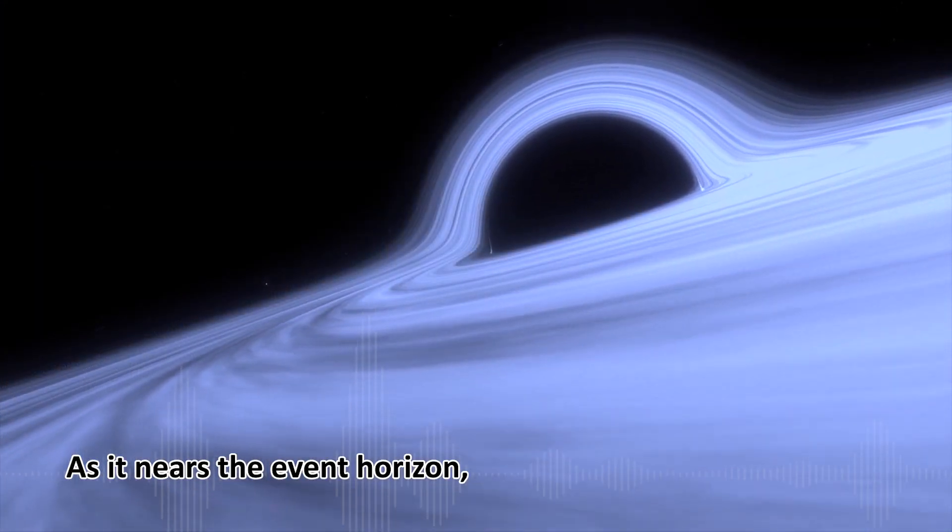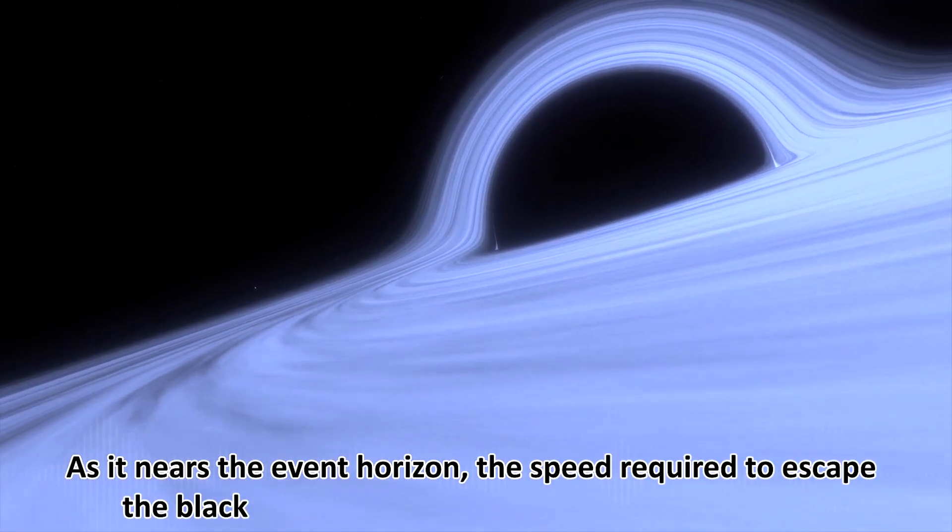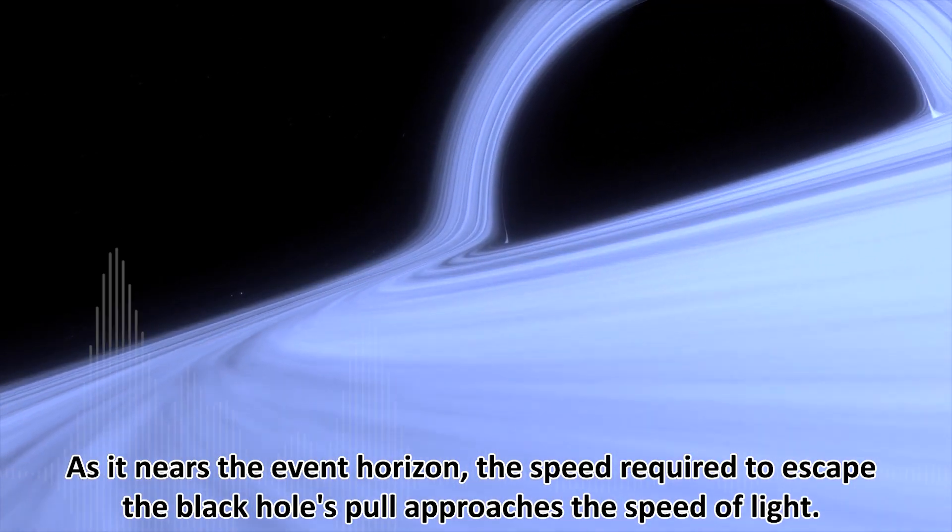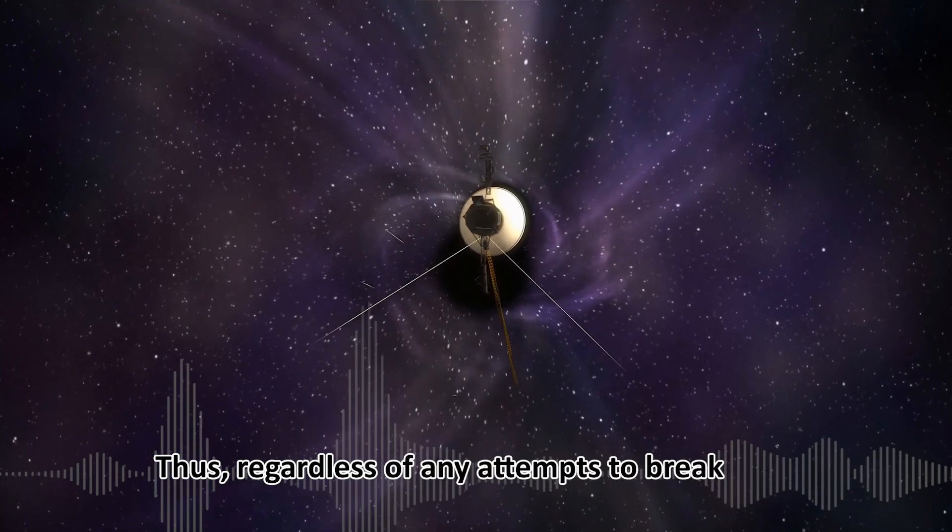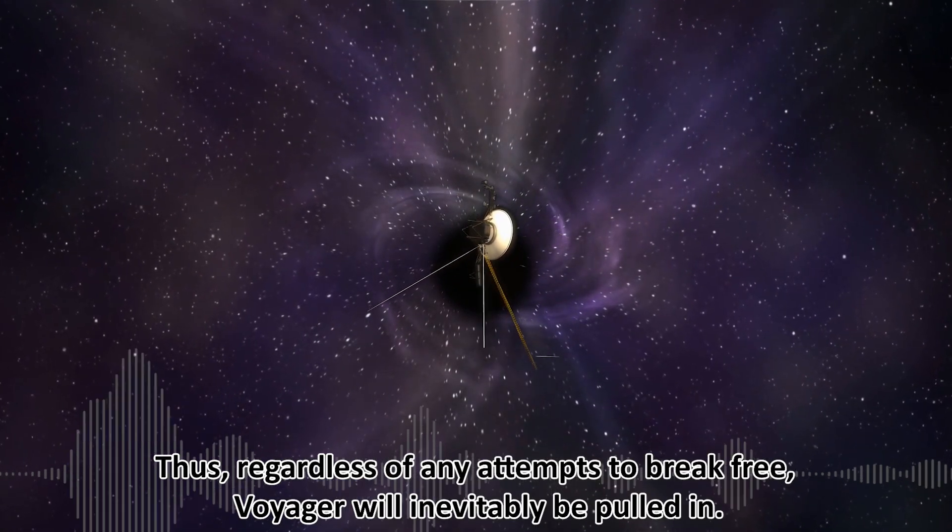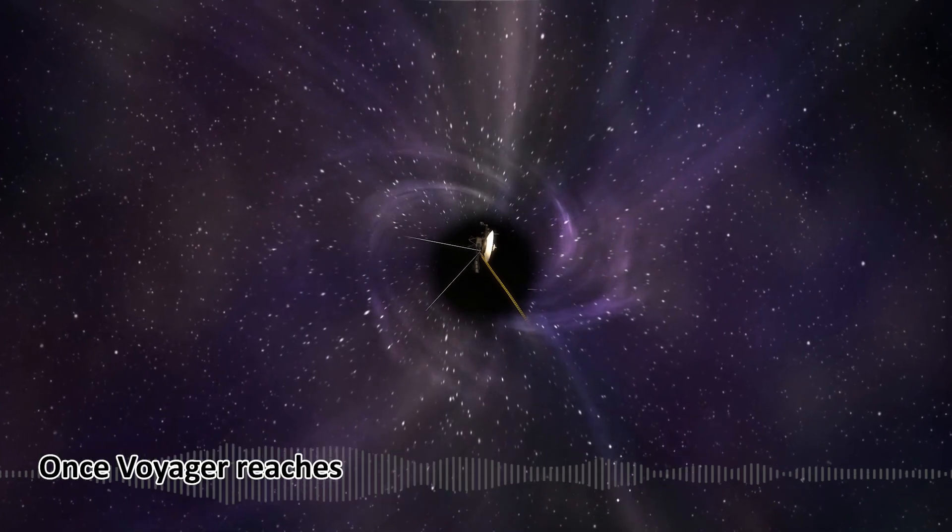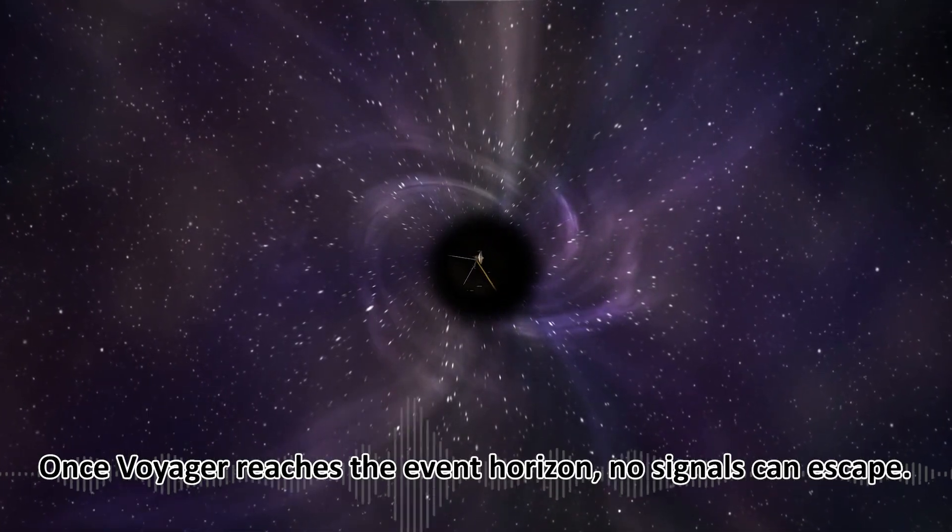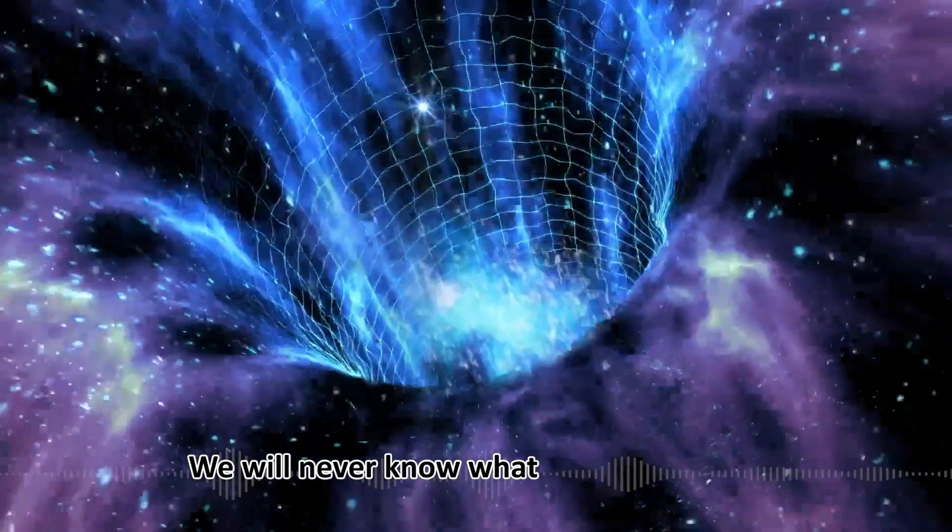As it nears the event horizon, the speed required to escape the black hole's pull approaches the speed of light. Thus, regardless of any attempts to break free, Voyager will inevitably be pulled in. Once Voyager reaches the event horizon, no signals can escape. We will never know what happens inside.